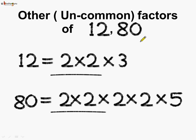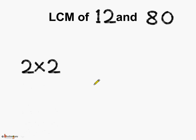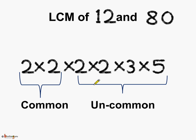Next, let us find the other factors of 12 and 80. Now, how to get the LCM of 12 and 80? For this, we multiply the common factors and we multiply the uncommon factors to get the LCM. So LCM is the product of common factors and the uncommon factors of the given numbers. This is equal to 240.